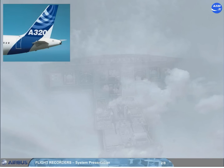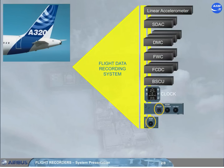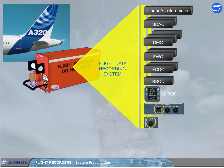The aircraft is equipped with the flight data recording system, which records the mandatory parameters from different computers as shown. A digital flight data recorder DFDR allows to store the last 25 hours in a fireproof and shockproof box with an attached underwater locator beacon. The DFDR is fitted in the tail section of the aircraft.